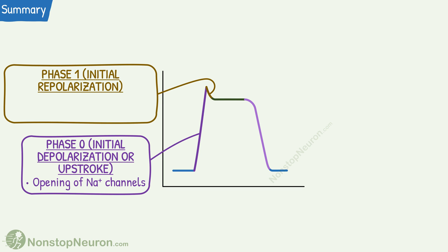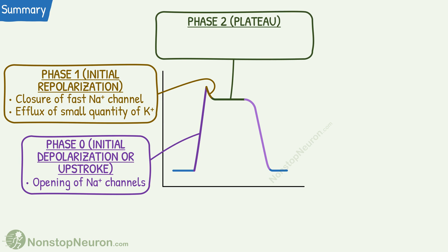Phase 1 or initial repolarization is due to closure of the fast sodium channels and efflux of a small quantity of potassium through open potassium channels. Phase 2 or plateau is due to the opening of slow or L type of calcium channels leading to calcium influx and closure of potassium channels which prevents efflux of potassium.